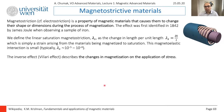Of course, this costs energy. Therefore, engineers spent a lot of effort finding materials without magnetostriction. Permalloy — an alloy of nickel and iron — is one such material that has ideally zero magnetostriction.